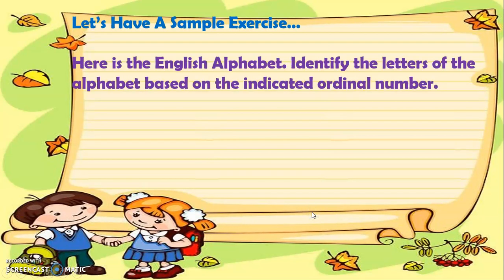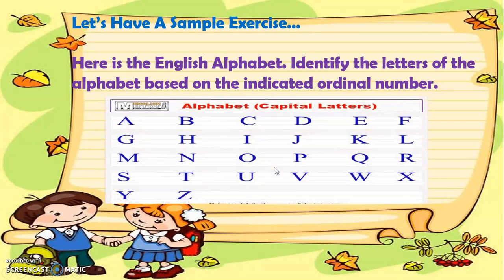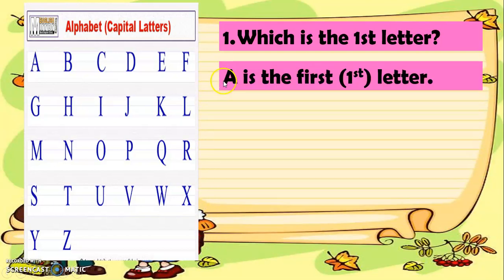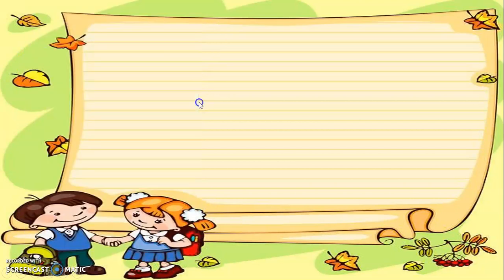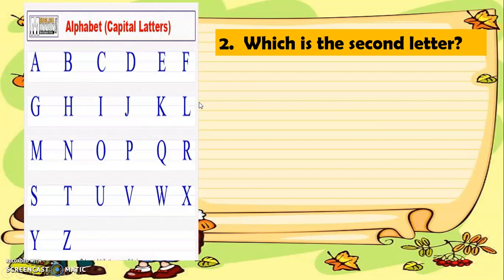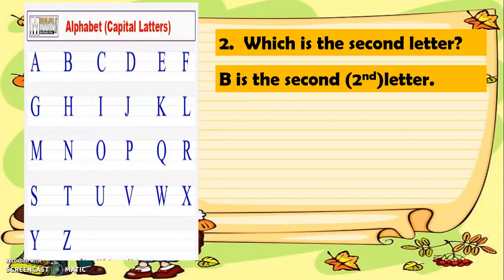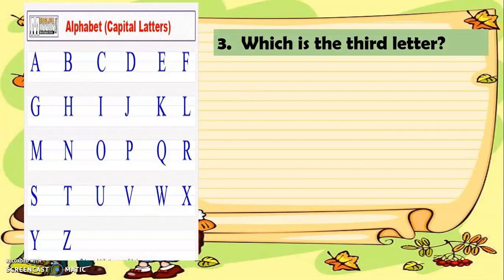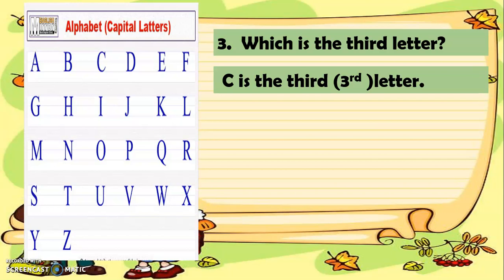Now let's have a sample exercise. Here is the English alphabet. Let's identify the letters of the alphabet based on the indicated ordinal number, with A as our starting point. Which is the first letter? A is the first letter. Which is the second letter? B is the second letter. Which is the third letter? C is the third letter.